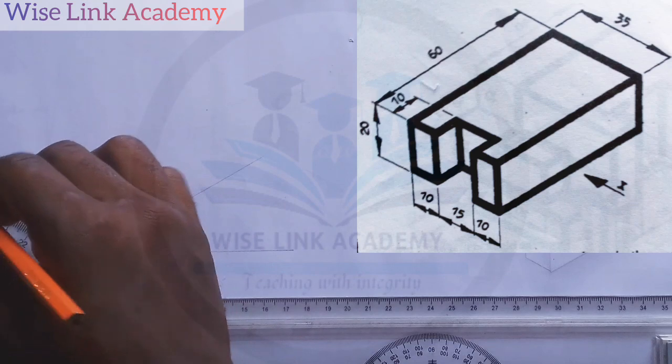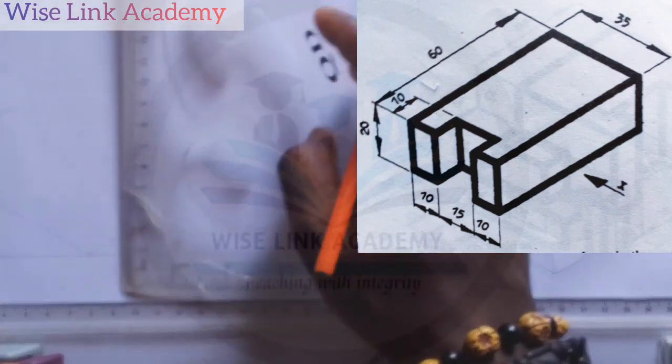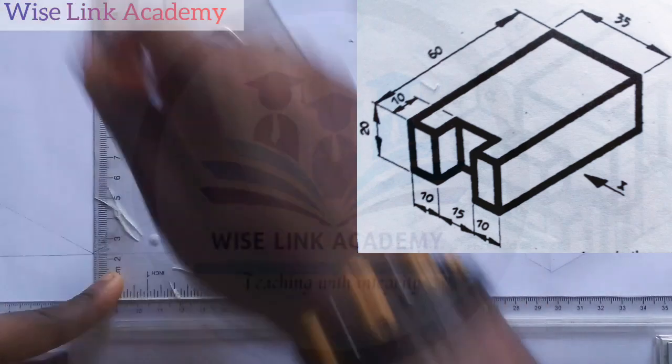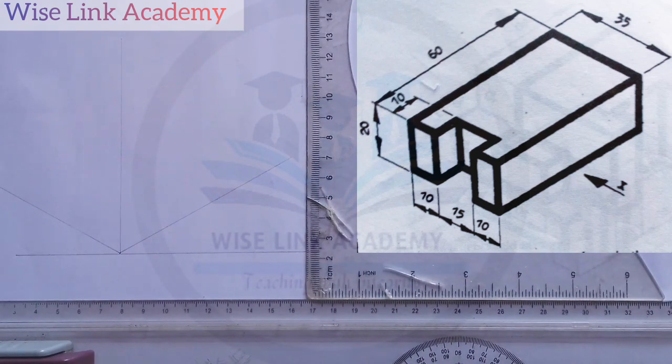At this point, take it down this way. Having done that, I'll take the height upward. This point, take it upward. So this is what we meant by isometric axes.